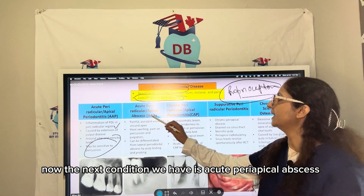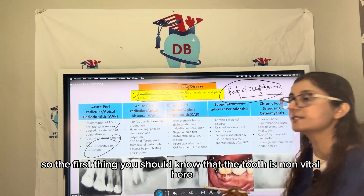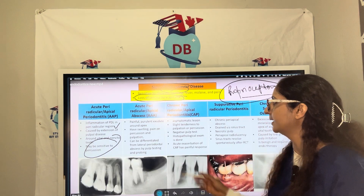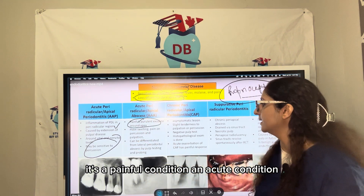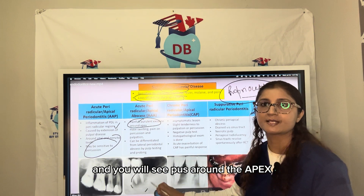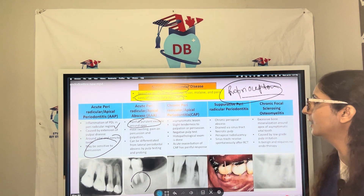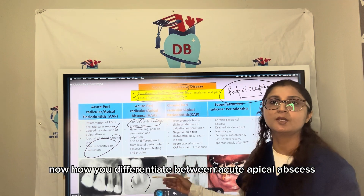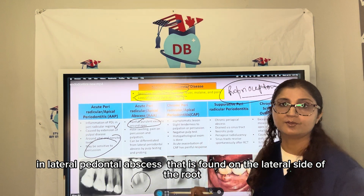The next condition is Acute Periapical Abscess. The tooth is non-vital, it is a painful acute condition, and you will see pus around the apex, as visible in the picture.